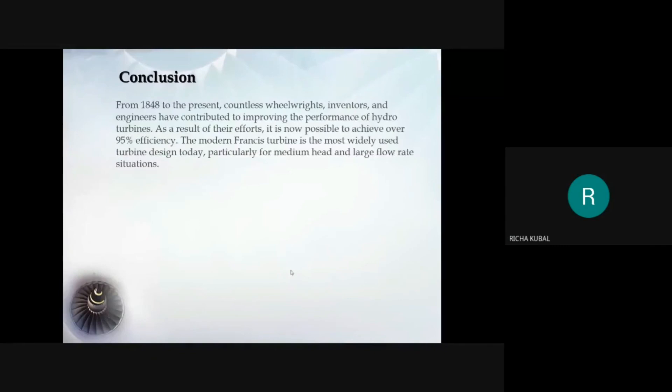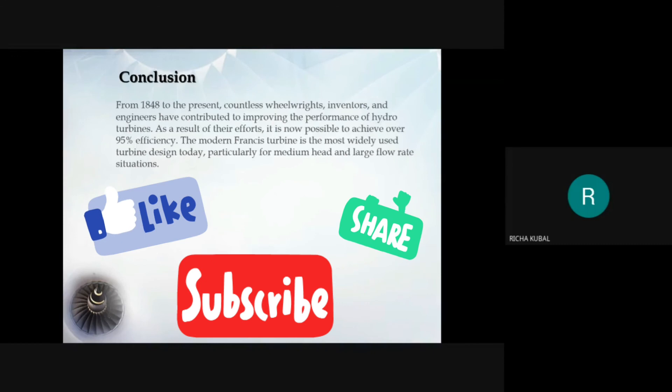Conclusion. From 1848 to the present, countless engineers have contributed to improving the performance of hydro turbines. As a result of the effort, it is now possible to achieve over 95% efficiency. The modern Francis turbine is most widely used turbine designed today, particularly for medium head and large flow rate situations.